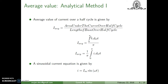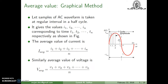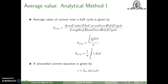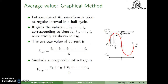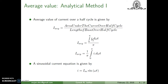How do we calculate the area under the curve? We take the integration of this curve — that is, the integral from 0 to pi of i d(ωt), because the x-axis is with respect to ωt. Hence the integration is from 0 to pi of i d(ωt). So I_average is equal to (1/π) times the integral from 0 to pi of i d(ωt).